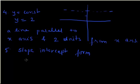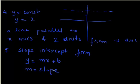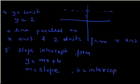The slope-intercept form of a line is always written as y equals mx plus b, where m is the slope — that is the angle which the line makes with the x-axis — and b is the intercept, which is the point on the y-axis where the line cuts it.